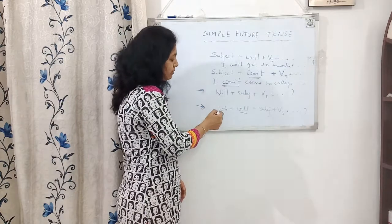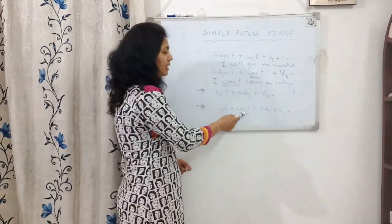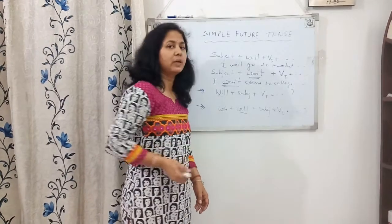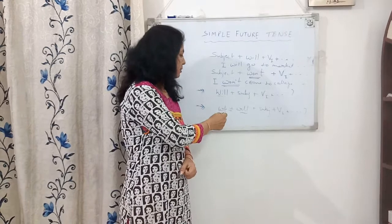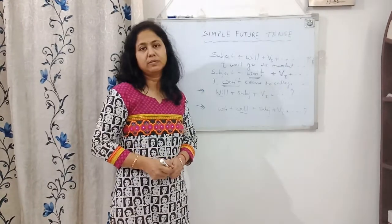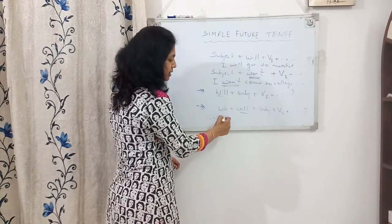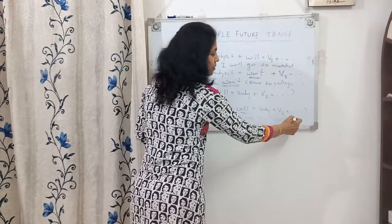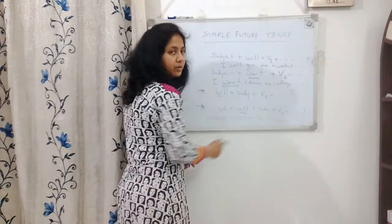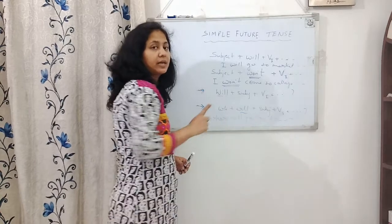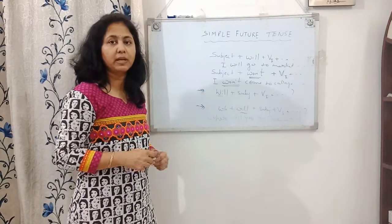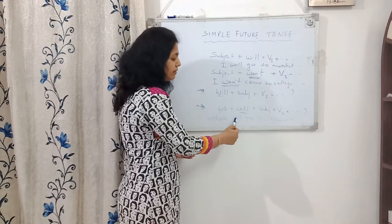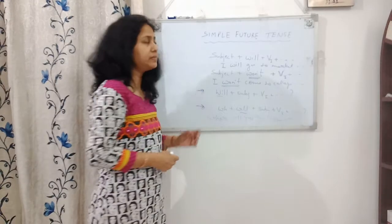For taking any information about the future, we can use 'will' as a helping verb after the question word. For example: Where will you go? A common mistake people make is saying 'Where you will go,' which is wrong. You must always use the helping verb first. The correct sentence is: Where will you go tomorrow? Or: How will they come? The structure is: Wh- question word + will + subject + verb in first form.